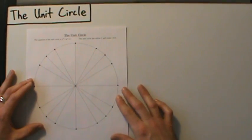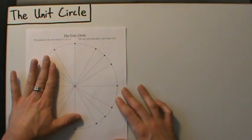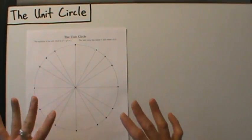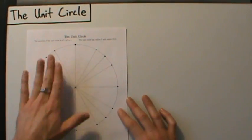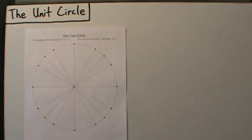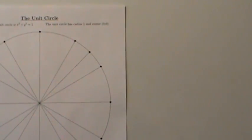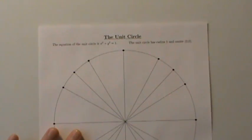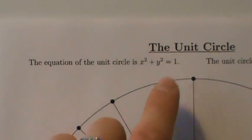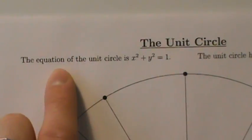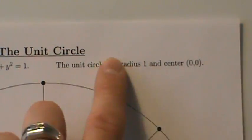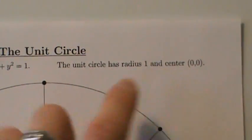Before we start, I want to point out that if you have to fill in a unit circle, it's really going to be much easier if you memorize the first quadrant. So the equation of the unit circle is x squared plus y squared equals 1. The unit circle has radius 1 and center at the origin (0, 0).